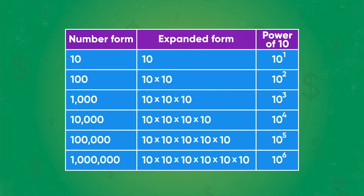This chart shows three different ways to write each number. There's number form, like one thousand. There's expanded form, which is ten times ten times ten. And now we have another way to show this number using powers of ten. What patterns do you notice in this table? The power of ten shows us how many times to multiply by ten.